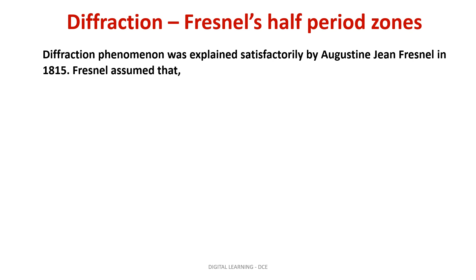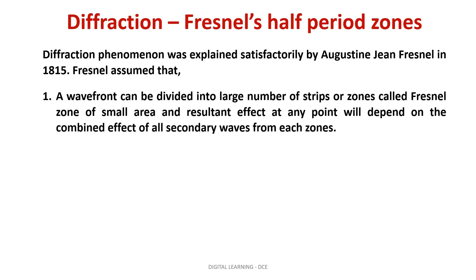To move ahead, we have to know Fresnel's assumptions. We know that a point source produces a spherical wavefront and an extended source produces a plane wavefront. First, a plane wavefront is produced using an extended source. Then the plane wavefront was divided into a large number of small elements or zones, and they are called Fresnel's zones.